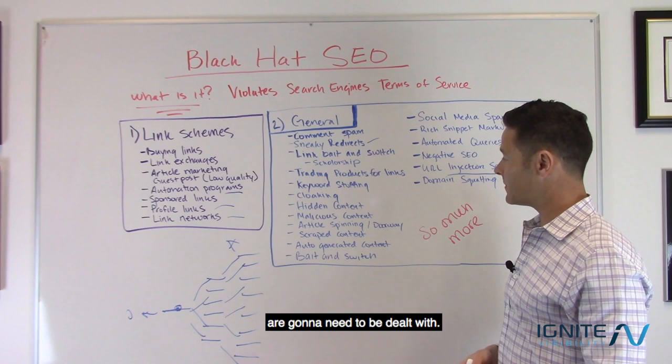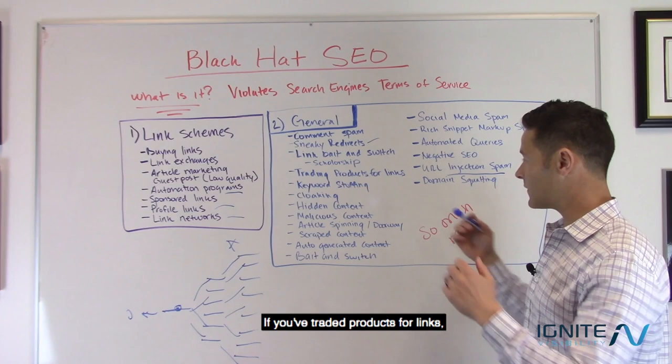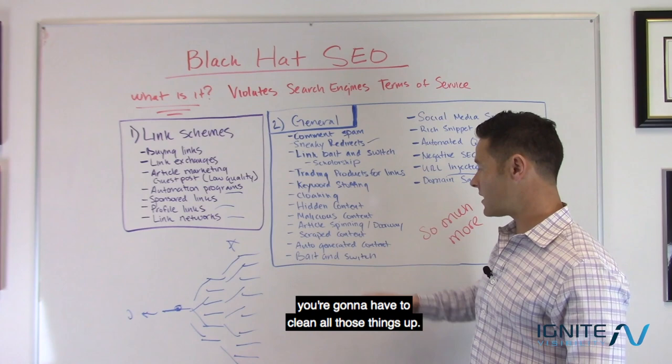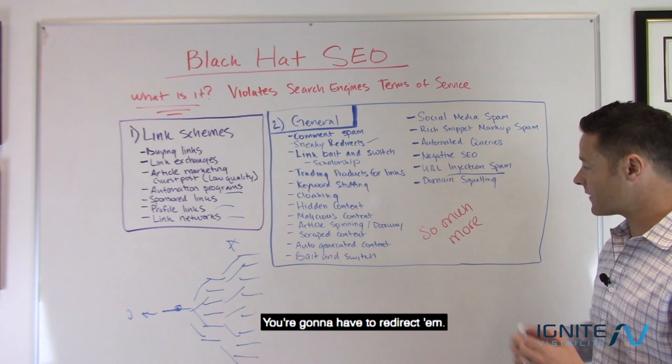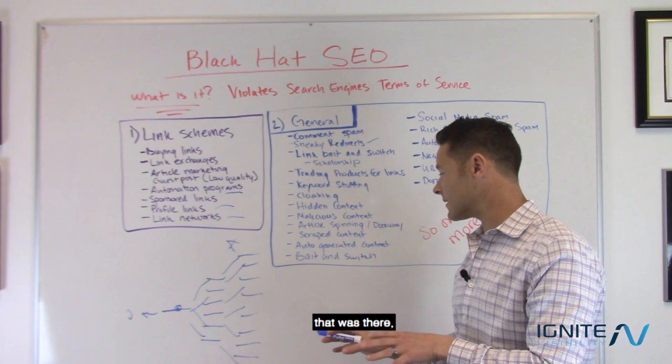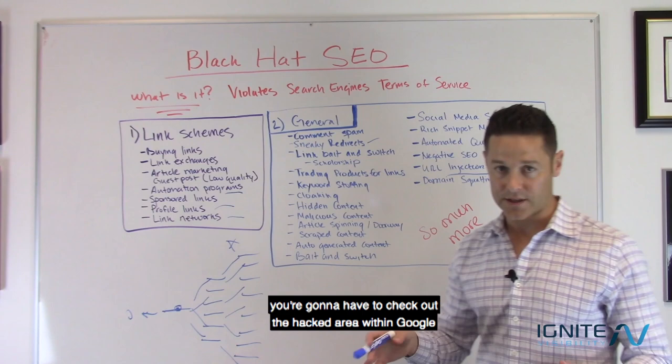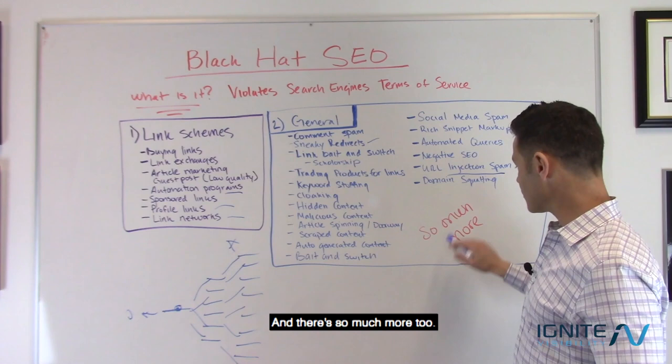Other issues also need to be dealt with. If you've done keyword stuffing, you'll have to reduce it. If you traded products for links, go back and clean that up — maybe do a re-inclusion request with Google. If you've done cloaking, hidden content, or malicious content, you need to clean all of that up. If you have doorway pages, take them down and redirect them. If you've done bait and switch, push the old page live or 404 those pages. If your domain's been hacked, check the hacked section within Google Search Console to find out what's gone wrong and how to fix it.